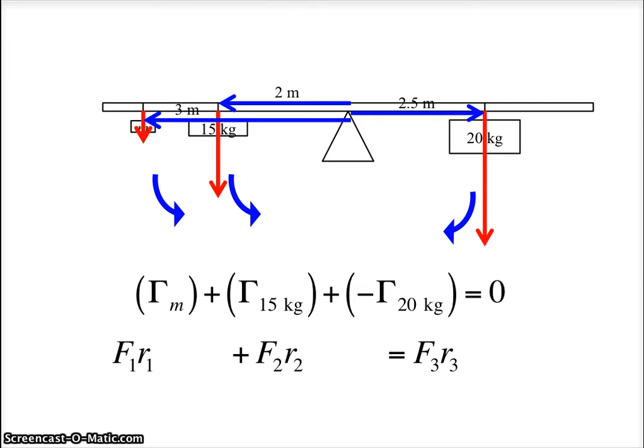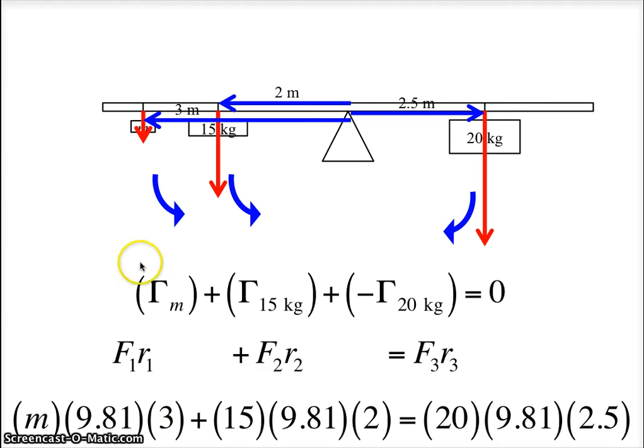The next thing we can do is plug in values. Each force is M times G. Here's a force, which is M times G. Here's a force, which is M times G. And then you plug in the distances, and you solve for M.